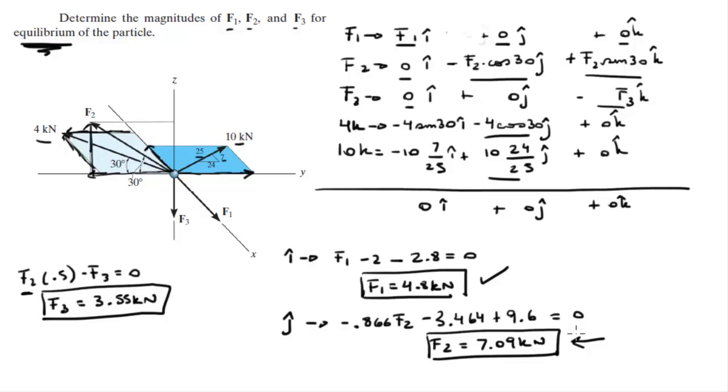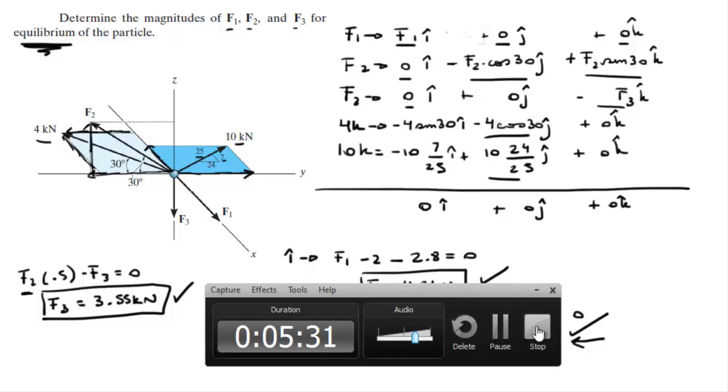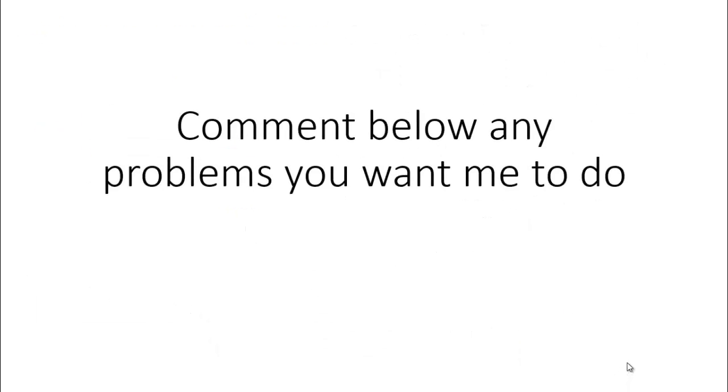So we have our final answers: F1 = 4.8 kN, F2 = 7.09 kN, and F3 = 3.55 kN. Please comment below if you want me to solve any problems. Thank you.